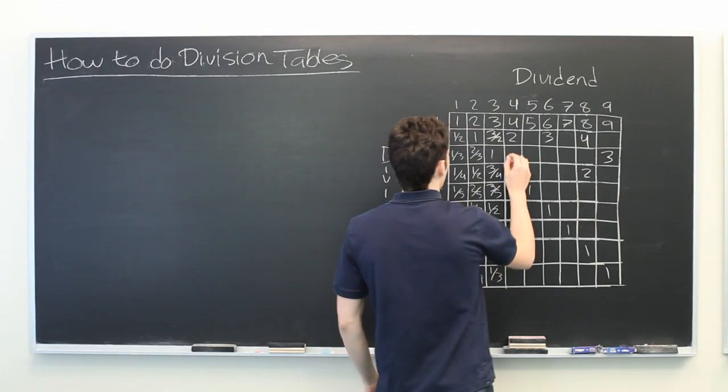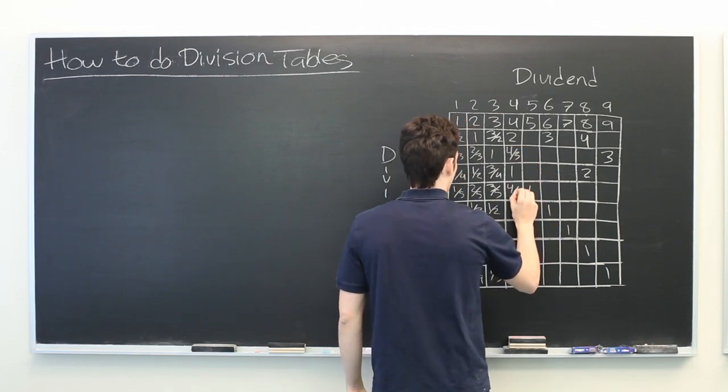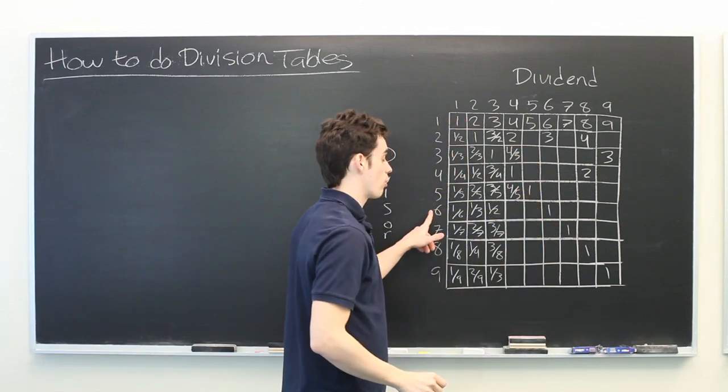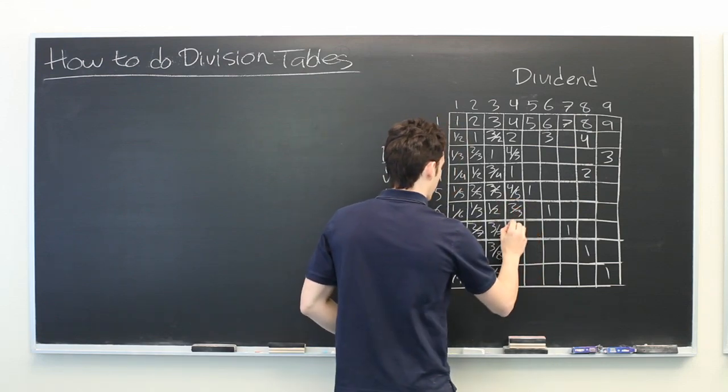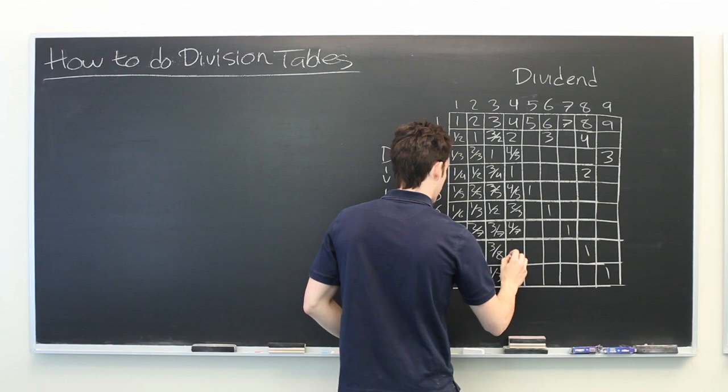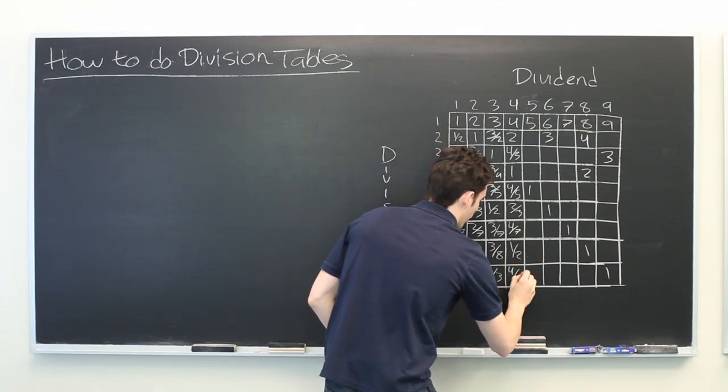Let's do the fours. Four-thirds, four-fifths. Four over six can simplify to two-thirds. Four-sevenths. Four over eight can simplify to one-half. And four-ninths.